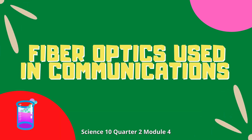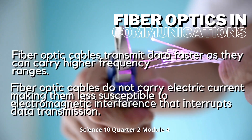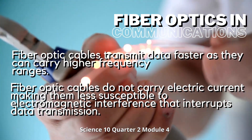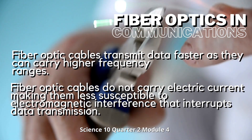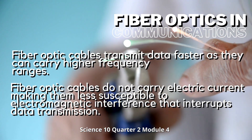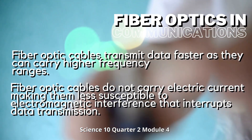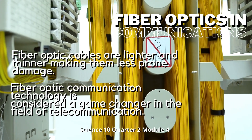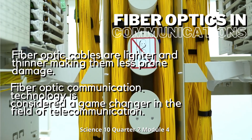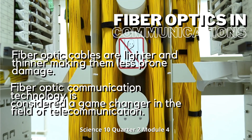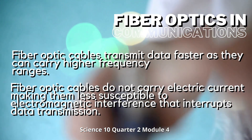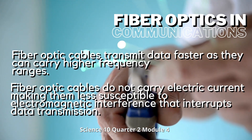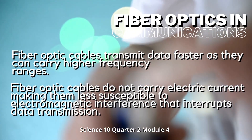Fiber optics are used in communications. Signals are sent by laser at near-infrared frequencies over hair-like fibers made of glass or plastic, as opposed to copper wire that uses electrical signals. Fiber optic cables do not carry electric current, making them less susceptible to electromagnetic interference that interrupts data transmission. Fiber optic cables can carry signals farther than copper cables, and are lighter and thinner, making them less prone to damage.